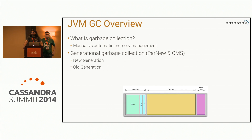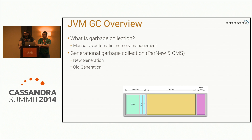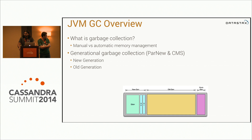Now we're going to get into JVM garbage collection. It has a reputation as a mythical beast that's impossible to wrangle, but honestly it's really not that crazy. Garbage collection basically allows us to not have to worry about managing pointers and keeping track of which memory needs to be freed — the JVM takes care of that for us. With Cassandra, we ship with the ParNew and CMS garbage collection algorithms, and those are generational. New data is allocated into the new generation and then over time it's copied over into the old generation.